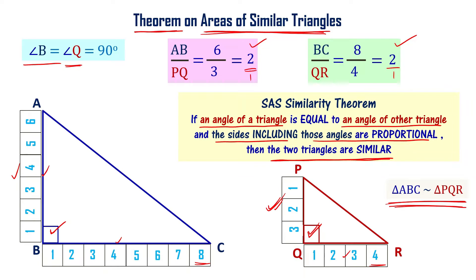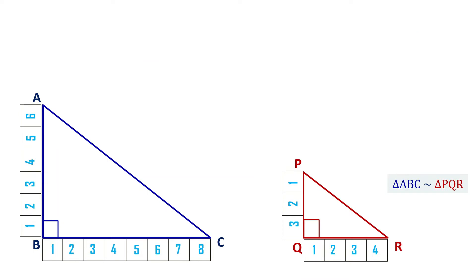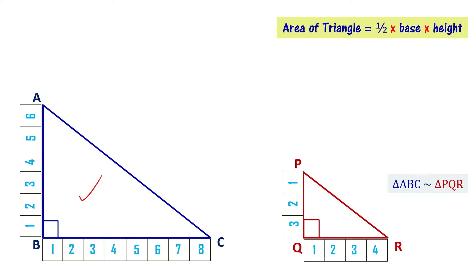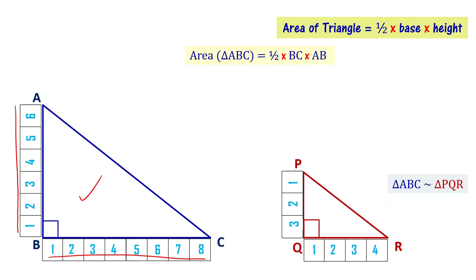Now let's discuss the theorem on areas of similar triangles and look at the areas. The area of a triangle formula is half base times height. For triangle ABC, area equals half times BC times AB, which is the base and height respectively. BC is 8 units and AB is 6 units, so half times 8 times 6 equals 48 by 2, which equals 24.